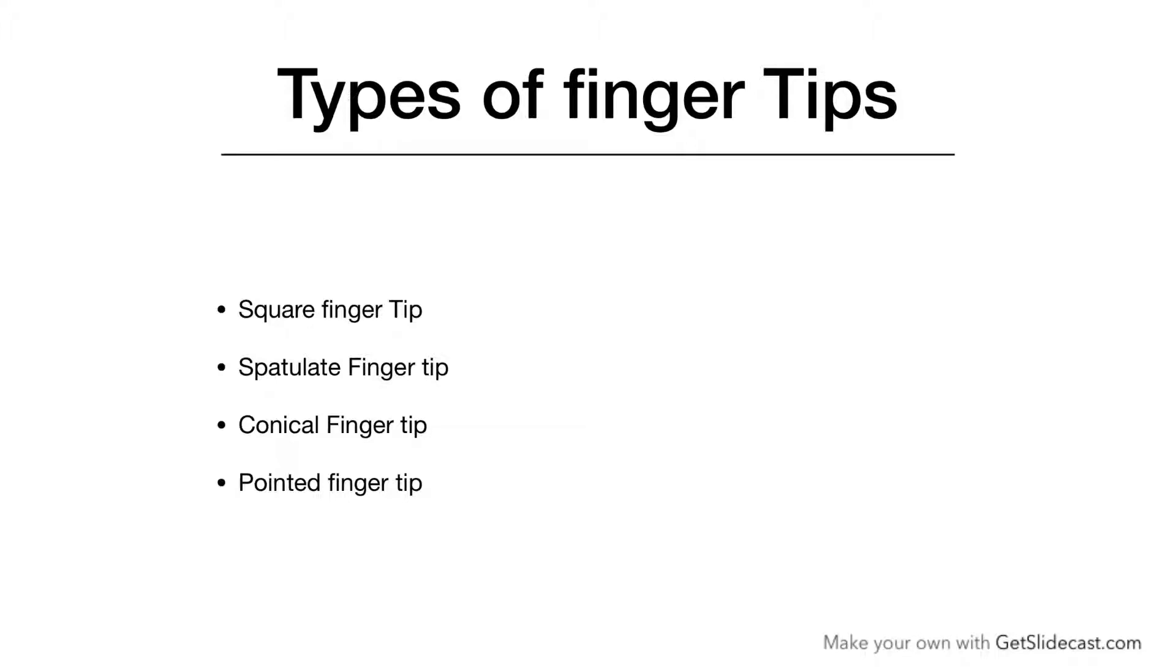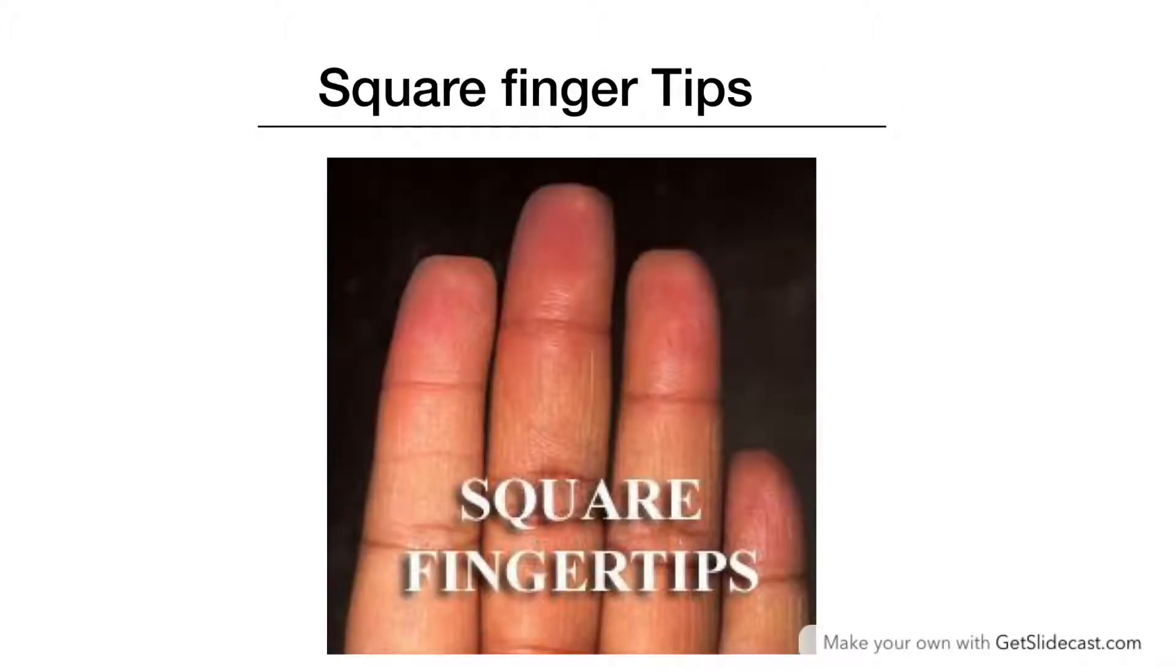Let's start with square fingertips. As you can see on the screen, this palm has square fingertips. Square tipped fingers indicate order. This is a practical earth attribute related to regularity and caution.